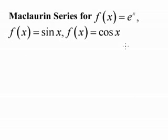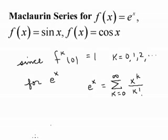Now let's find some additional Maclaurin series for f of x equals e to the x, f of x equals sine of x, and f of x equals cosine of x. We can find these Maclaurin series by taking derivatives and evaluating them at x equals 0. For f of x equals e to the x, the kth derivative at 0 is always 1, because the derivative of e to the x is always e to the x. So we can write e to the x as the sum from k equals 0 to infinity of x to the k over k factorial, where all derivatives at 0 equal 1.